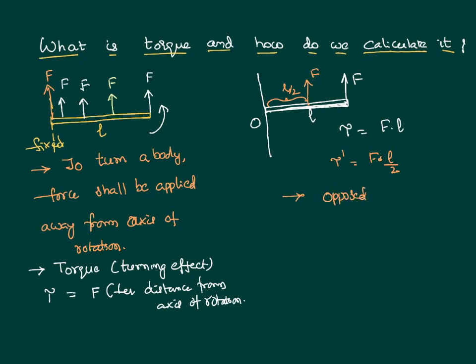Why do we need torque? Rotational motion is opposed by moment of inertia, just like mass opposes translatory motion. To overcome that moment of inertia, we must apply force away from the axis of rotation — that is why we need a torque.